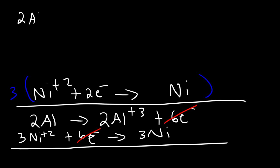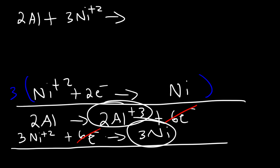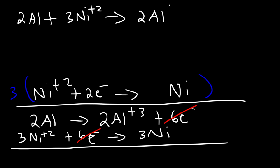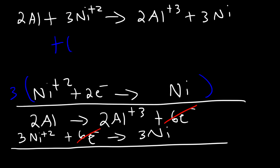On the left side we have two aluminum atoms reacting with three nickel ions, and on the right side we have two aluminum cations being produced and three nickel atoms. The number of nickel particles is the same on both sides, and the number of aluminum particles is the same. The total charge is the same: on the left side it's 3 times 2, which is positive 6, and on the right side it's 2 times 3, which is also positive 6. When balancing a redox reaction, you need to make sure the number of atoms and the total charge are the same on both sides.